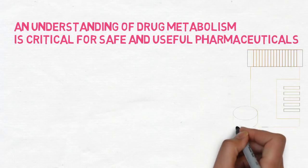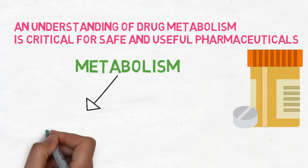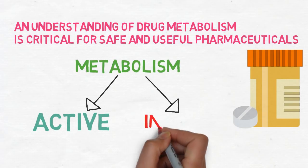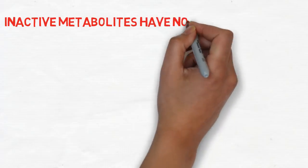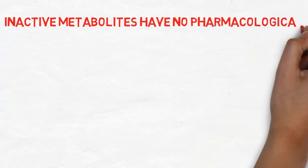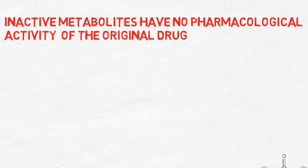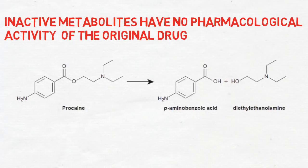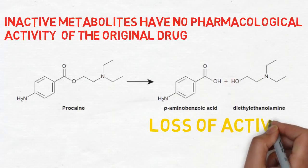Drug metabolism can result in one of two products: an active metabolite or an inactive metabolite. Inactive metabolites basically have no pharmacological activity of the original drug. An example of that would be the hydrolysis of procaine into para-aminobenzoic acid and diethylethanolamine, which results in the loss of anesthetic activity of procaine.